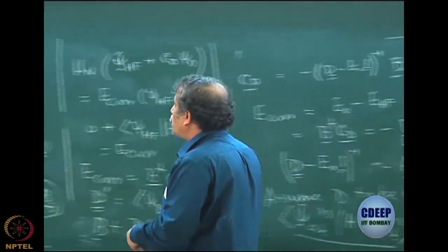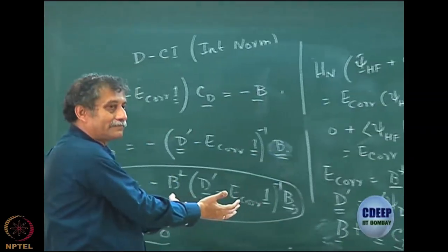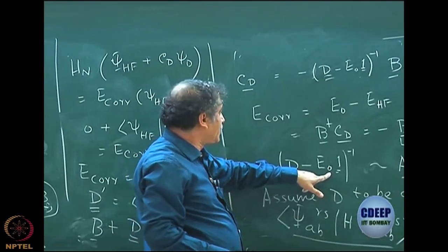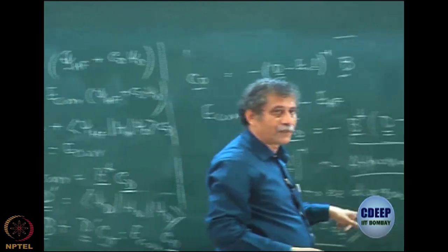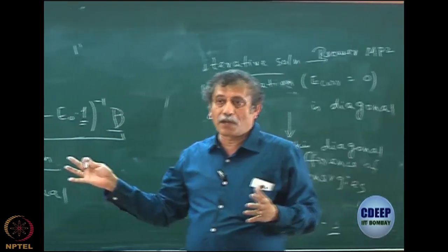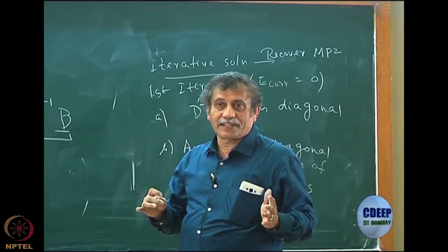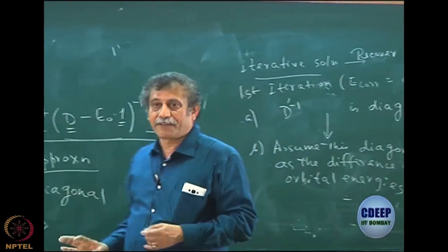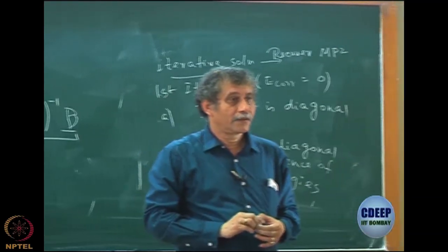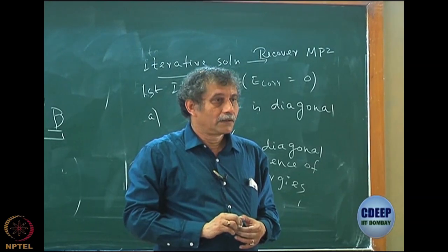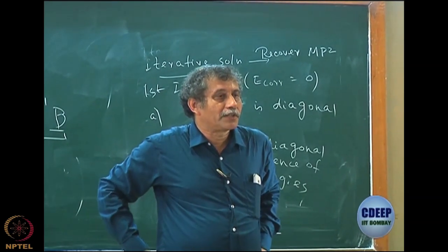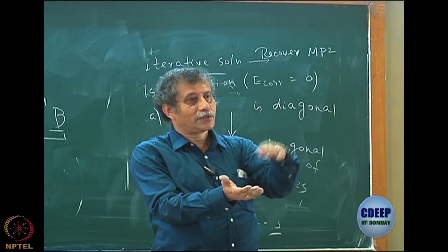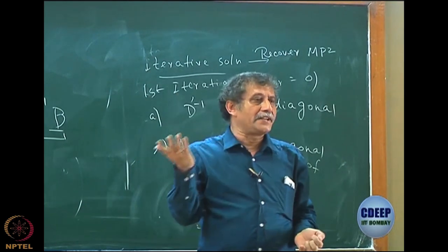So eventually what we use for CI is the normal-order form: we do not write E0 anymore, we write E_correlation, and D becomes D'. The entire CI equation is now in normal order and intermediate normalization. Regarding the variational upper bound: the upper bound would be on E_correlation — it is one and the same thing, since E_Hartree-Fock is always greater than or equal to E0. The upper bound remains on E_correlation.